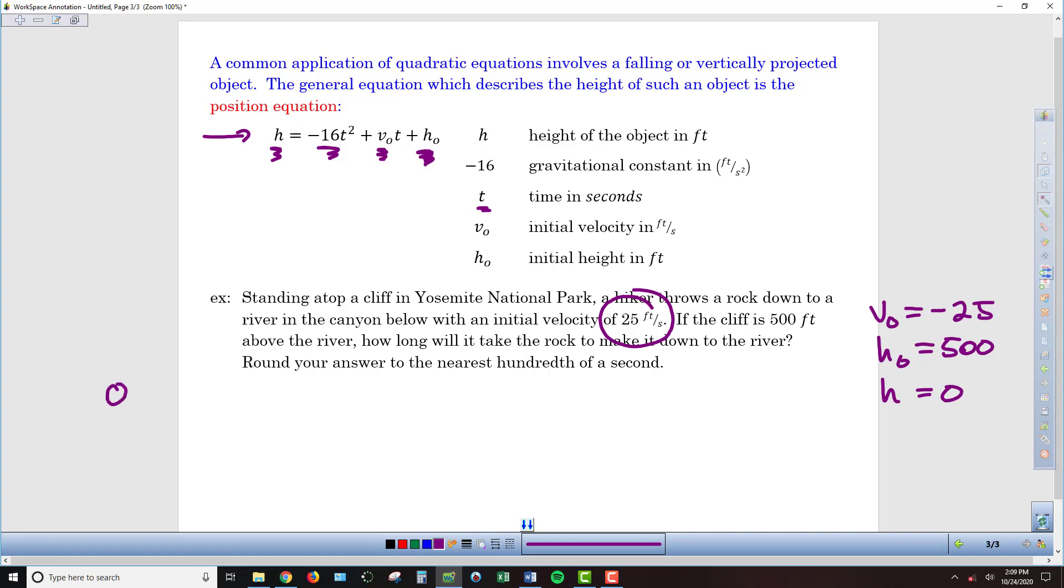we replace h with zero equals, then I've got negative 16t squared. Then I've got the v sub zero, we establish as negative 25, because the hiker throws the rock down. So, it's going to be minus 25t. And then I've got plus my h sub zero, my initial height is 500.